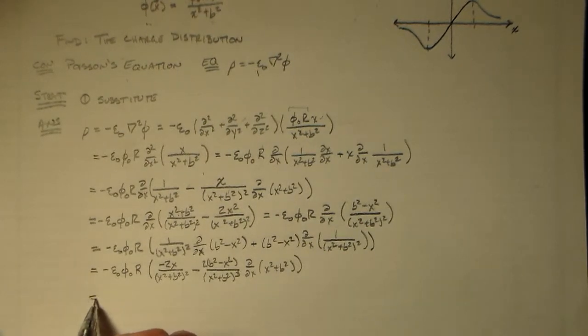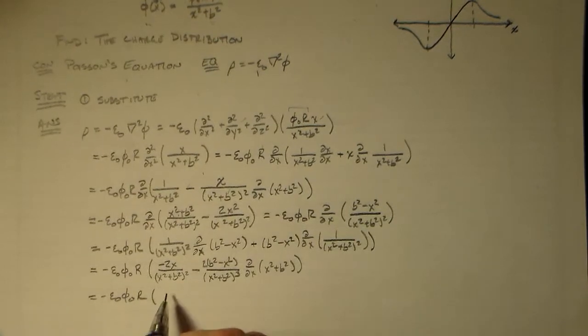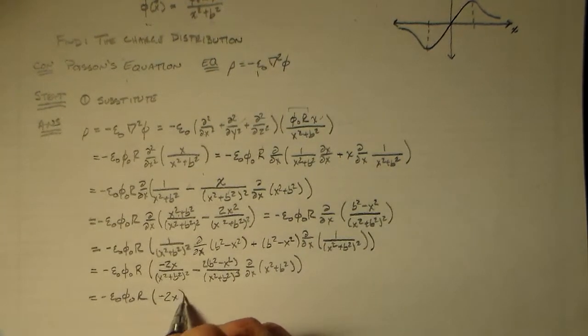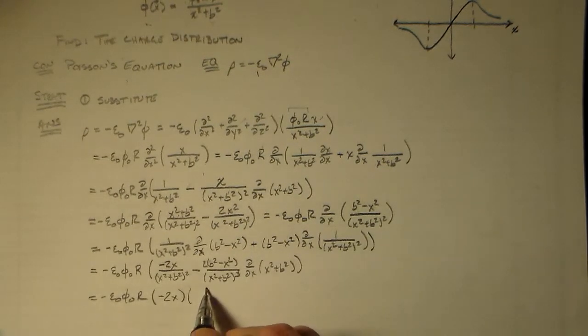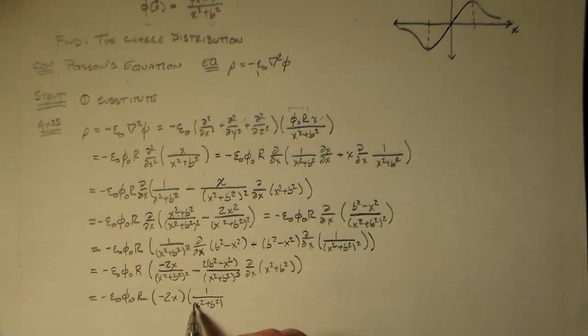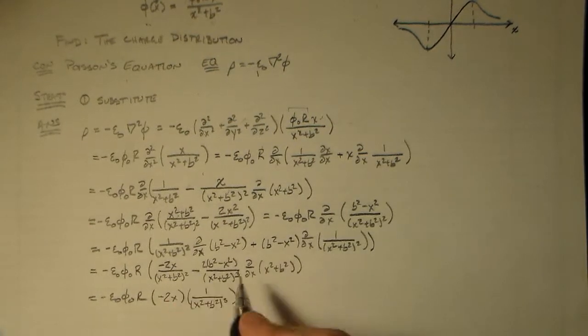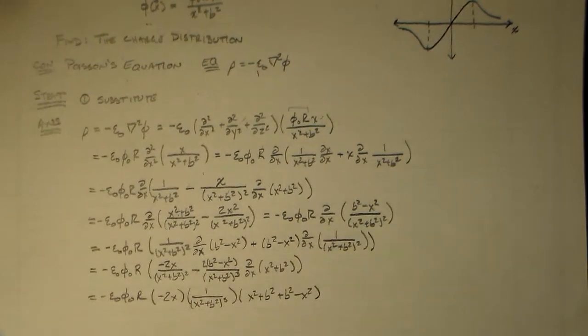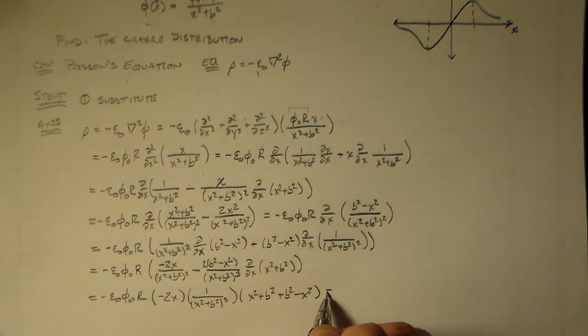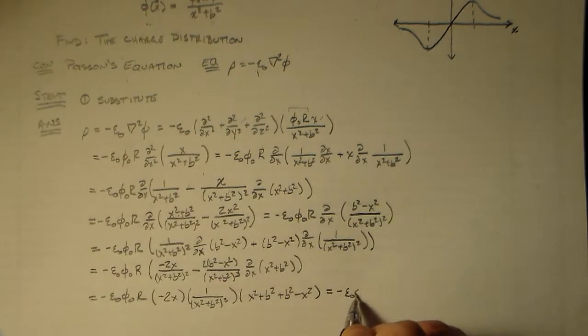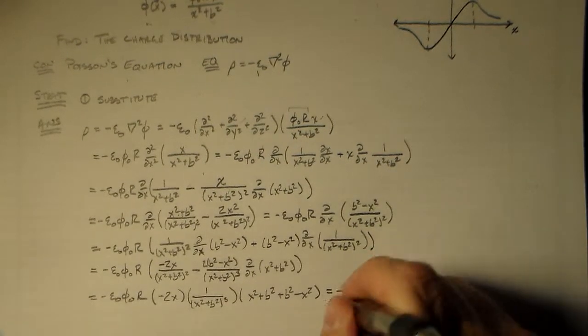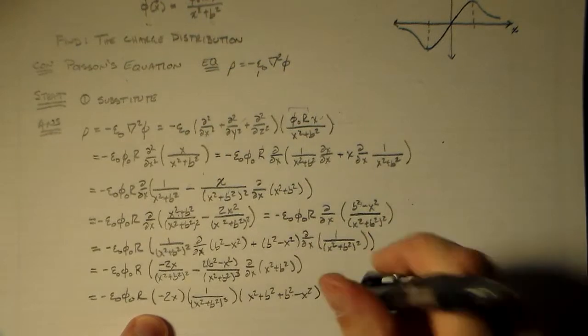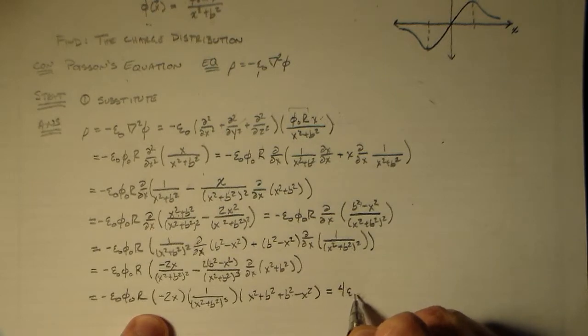And we still have left over the d dx of x squared plus b squared as we did before. And that gives us minus epsilon naught phi naught r. And actually as far as I can tell, the derivative here is minus 2x, so we've got a minus 2x we can bring out in front. And then if we want to bring out the x squared plus b squared cubed, we can do that as well. That just means instead of 1 there we have an x squared plus b squared. Then we have a plus b squared minus x squared. So we are there. We are finally there.